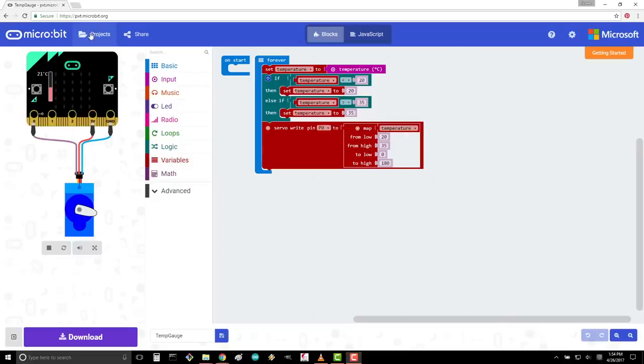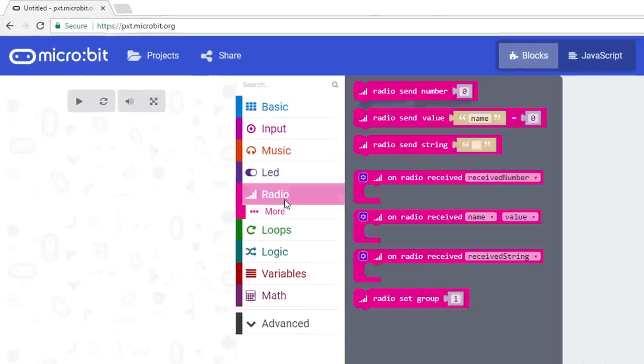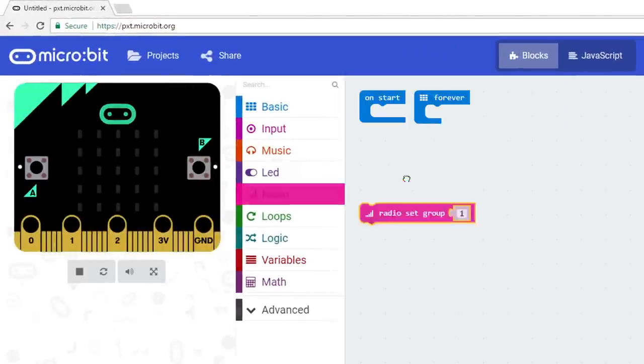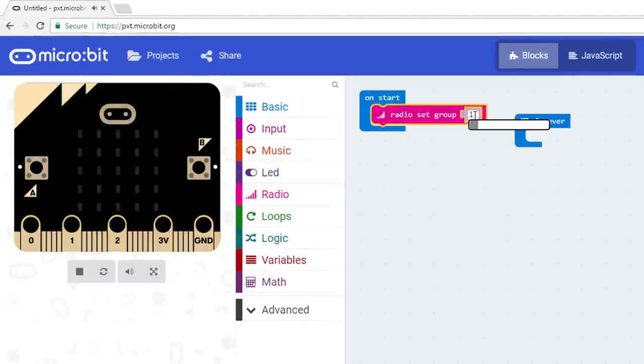Start a new project in MakeCode. From radio, drag Radio Set Group 1 to On Start. Change the radio group number from 1 to something else, like 42.